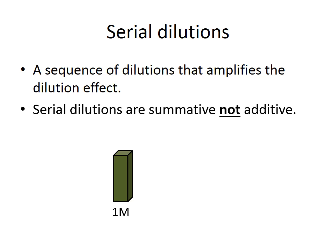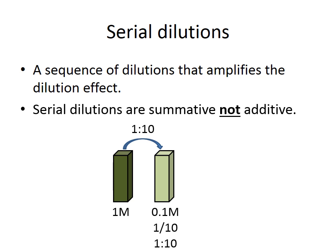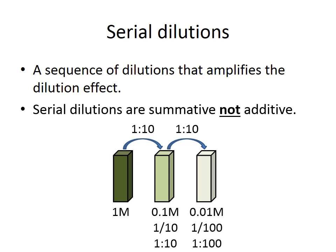In this example we start with a 1 molar stock solution, which is diluted 1-in-10. The new concentration will be 0.1 molar. If we then take that 0.1 molar solution and dilute it 1-in-10 again, the new concentration will be 0.01 molar. The first step is 1-in-10 and the second step is also 1-in-10, so the overall dilution from the original stock is 10 × 10 — a 1-in-100 dilution — giving one hundredth of the original concentration.